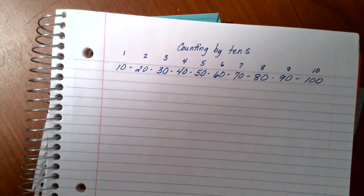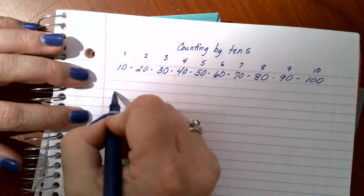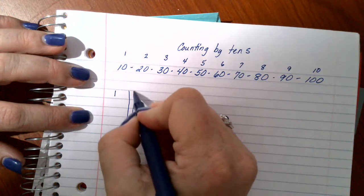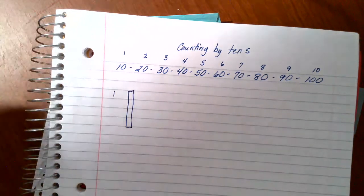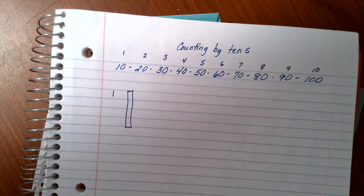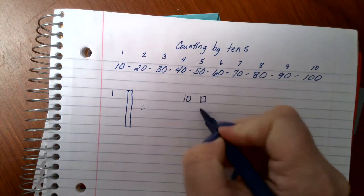So, if one ten equals ten ones, if one ten, we'll say there's a rod there. In fact, I think I actually have actual rods and cubes that we can use, if I can get them over here. If we say that one ten equals ten ones,